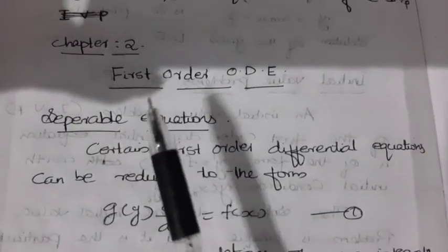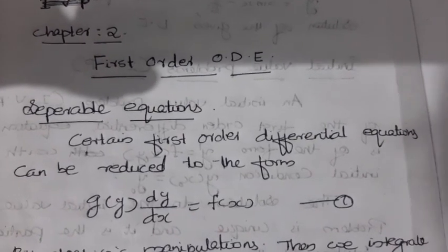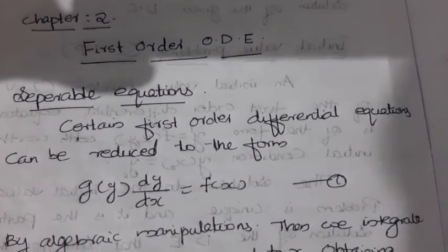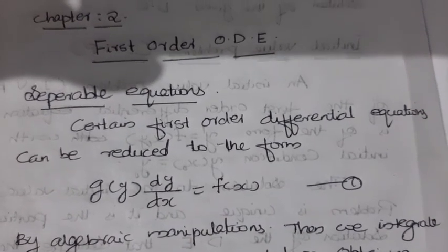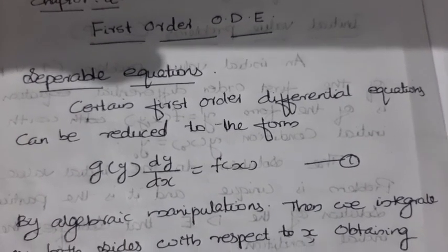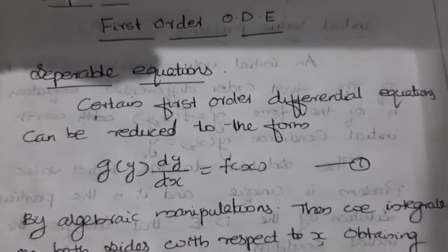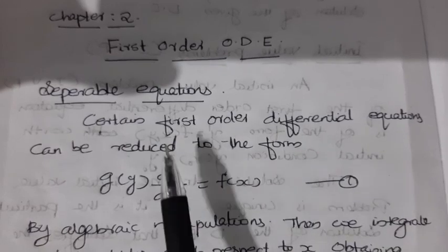The second chapter is first-order ordinary differential equations. In this chapter we discuss various methods for the solution of first-order ordinary differential equations. Today we are going to discuss what is the variable separable form of a differential equation and how to solve questions related to this.